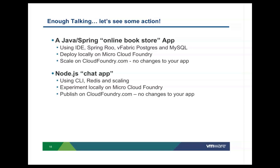Then we're going to have some fun with a Node.js chat application, using the command line interface of Cloud Foundry. Cloud Foundry allows two types of developer interfaces: one is an Eclipse-based IDE, and the other is a CLI — they're exactly the same. In the second example, we'll use the CLI tool. We'll deploy a Node.js chat application, use a Redis key-value store, and show it first on the Micro Cloud running locally. Then we'll scale it and deploy it to cloudfoundry.com, and we can see who chats first.